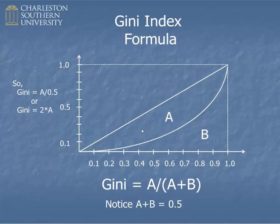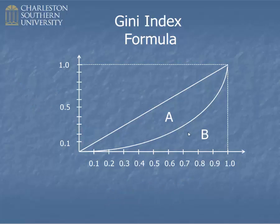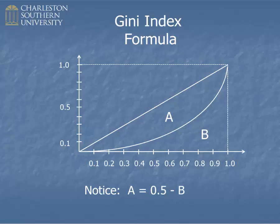The next thing to remember is that it's kind of difficult to get the area of A. It's much, much easier to get the area of B because it's already laying there in your Excel spreadsheet. So what you have to remember is that since A plus B is 0.5, then area A is just going to be 0.5 minus area B. A plus B is 0.5, so just rearranging that equation, A equals 0.5 minus B. And it's much, much easier to figure the area of B.